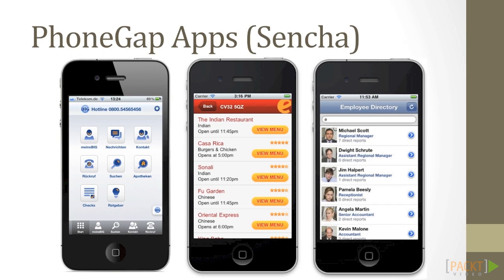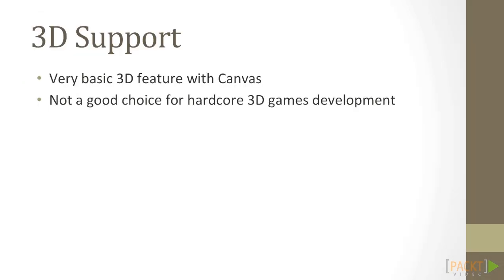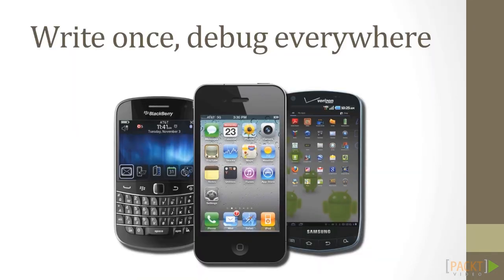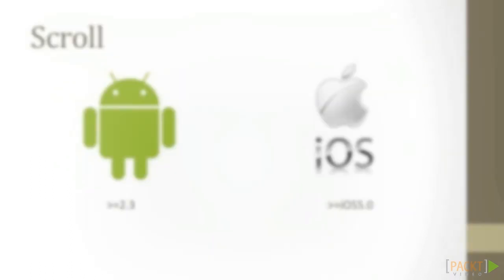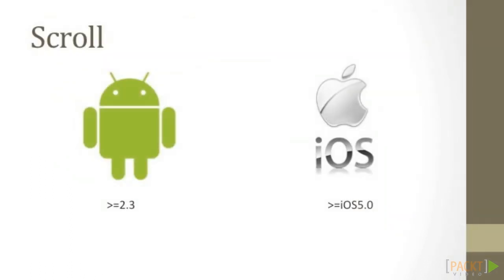Aside from the UI, PhoneGap currently says no to hardcore 3D applications. If you want to develop a 3D game, then PhoneGap is not a good choice. This results in some amount of debugging work on specific devices after development. For example, CSS scrolling is only supported after Android 2.3 and iOS 5.0. This video course will cover most of the gaps for your development.